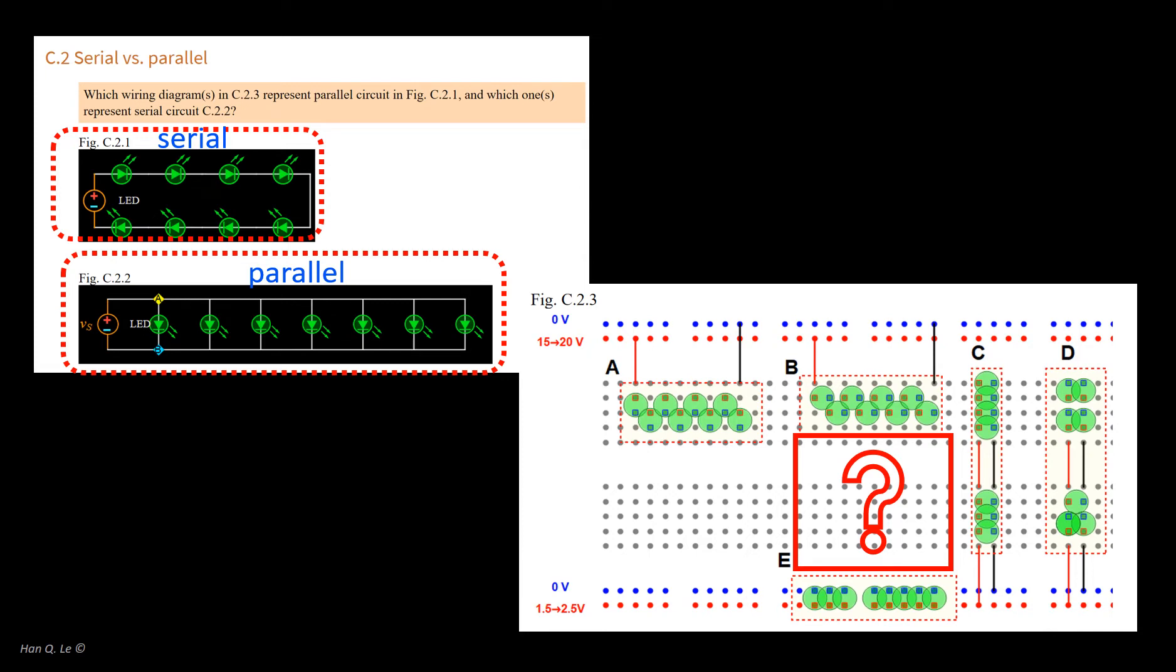Envision in your mind the current flow, or the lack of flow, to explain each circuit from A to E. This is a mental exercise, there is no need to build any circuit in this step.